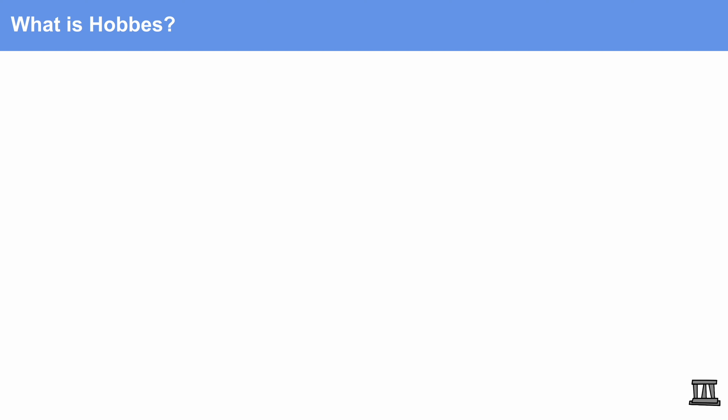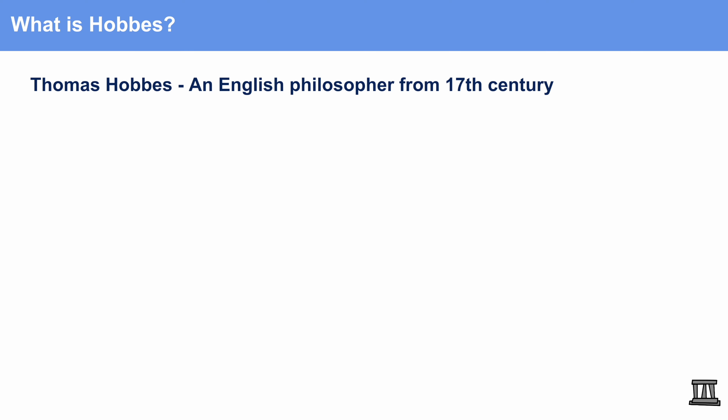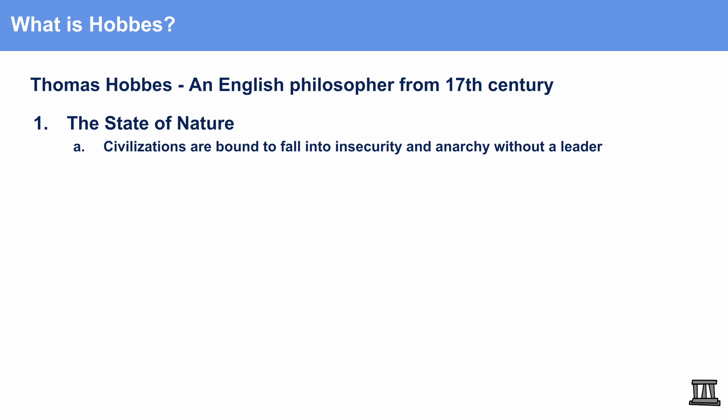The second philosophical theory we're going to talk about is Hobbes. Thomas Hobbes was also an English philosopher from the 17th century. His ideas form into two different things. The first talks about the state of nature, which proves that everyone, including civilizations, are bound to fall into insecurity and anarchy without a leader. Essentially, Hobbes is saying that people are inherently evil, and without any authority or leaders they would fall into complete madness. So Hobbes argues that we need a higher authority to always keep people in check.